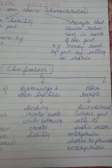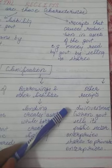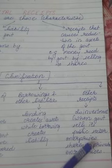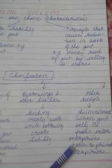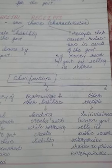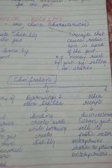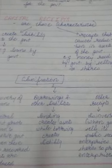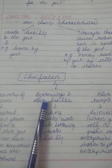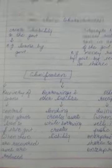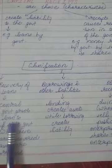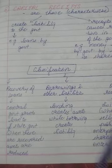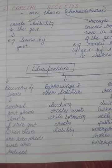Next is your other receipts — this means disinvestment. When the government sells its public sector enterprise shares to private enterprises, what happens is we are reducing our assets. So these three — recovery of loans, borrowings, and disinvestment — demonstrate the characteristics of capital receipts: asset reduction and increasing liability.